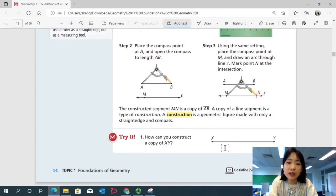Okay. So now it's your turn. Try number one. How can you construct a copy of segment XY? You're going to follow the exact same steps. You're going to make a construction. Remember, construction is a geometric figure made with only a straightedge and compass. So stop the video. I'll come back when you're ready for answers.